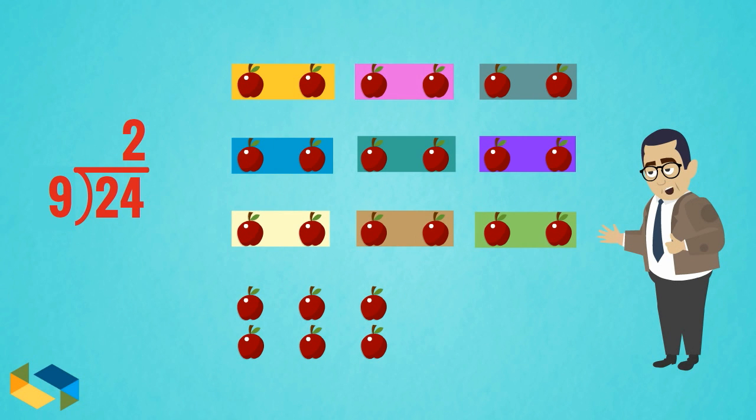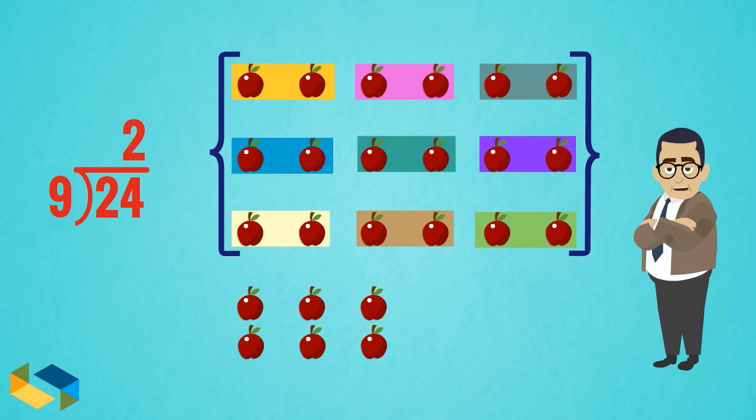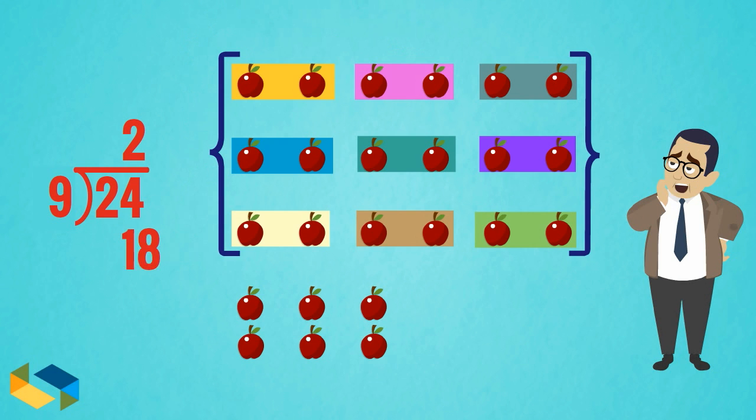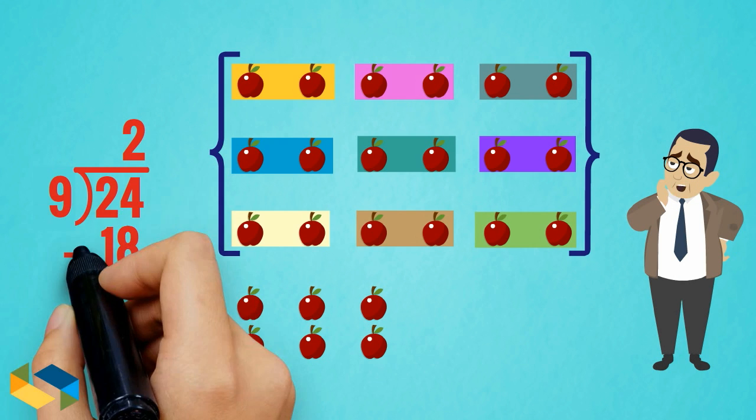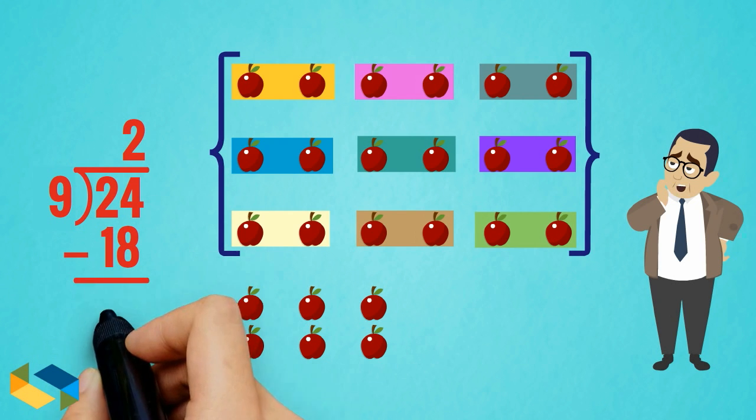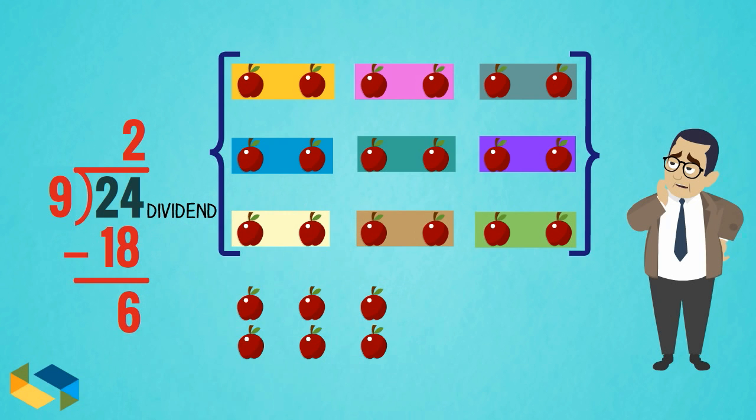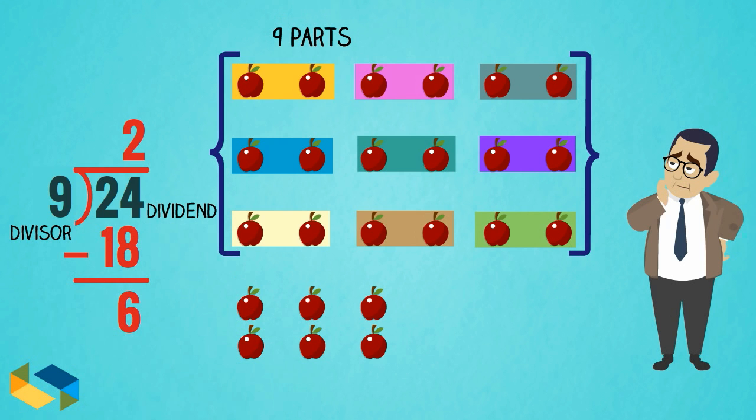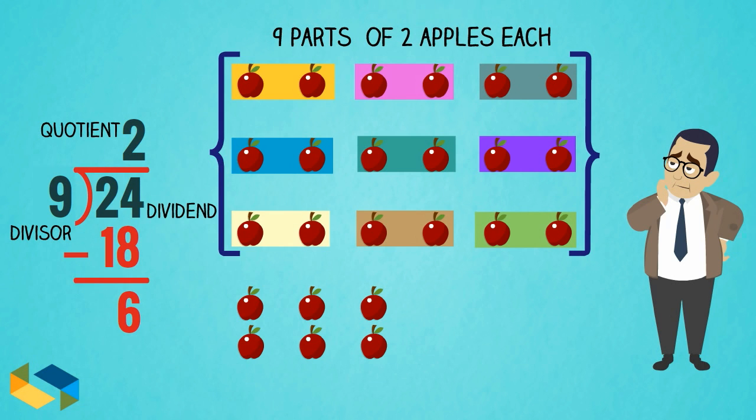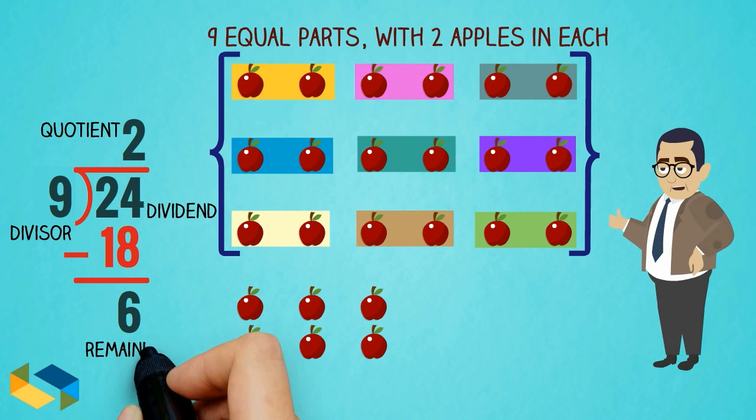Now, the way we write the entire division solution is that we first get the number of apples we calculated after dividing in equal parts, which is 18. We write 18 below the dividend and do a subtraction. We get the number 6, which is the number of leftover apples we got. Now, let's do a quick recap. We divided 24 by the number 9 to get 2 in each part with 6 as the remainder.